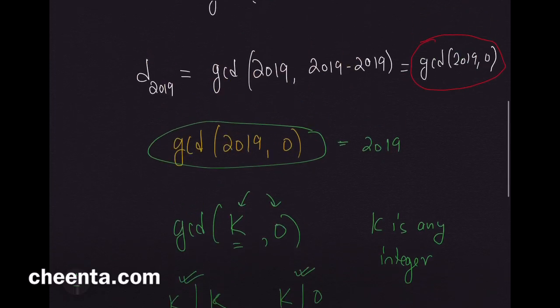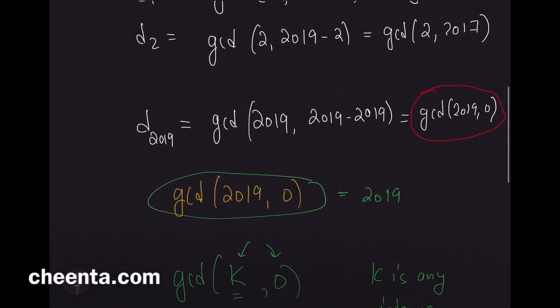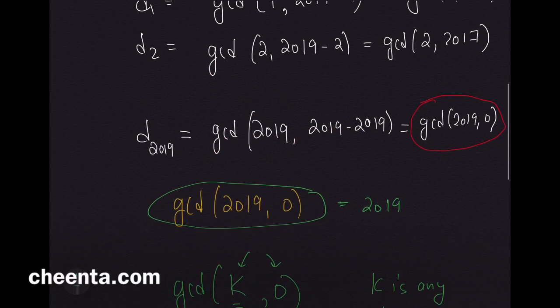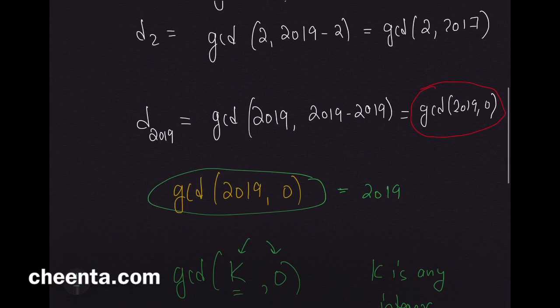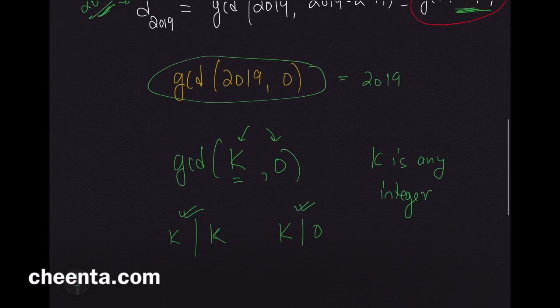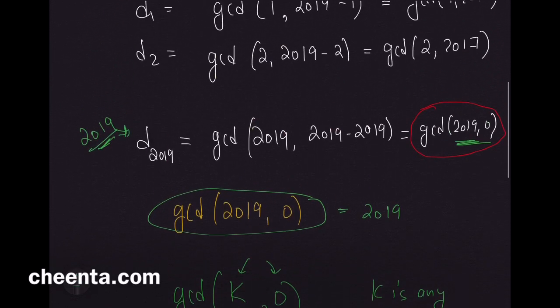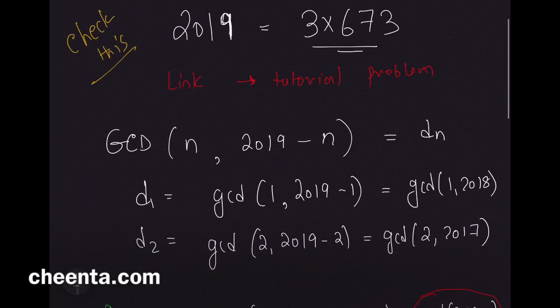Some students had a little confusion about this, so the last term d_2019 is simply 2019, because GCD(2019, 0) is simply 2019.